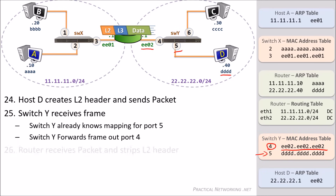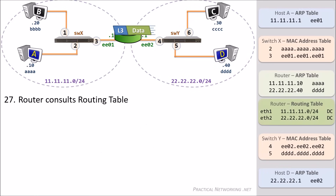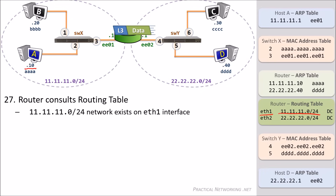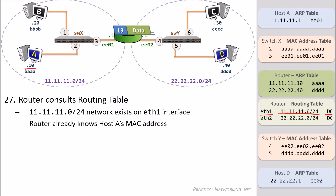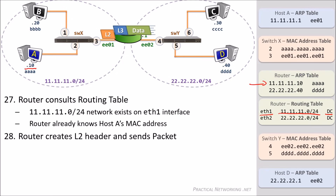The router will receive the packet and strip the Layer 2 header — its only purpose was to get the packet from Host D to the router. Like before, the router needs to figure out where to send this packet next. It takes a look at the Layer 3 header and sees that the packet is destined to 11.11.11.10. This network exists at the router's Ethernet 1 interface. Since the router is directly connected to this network and already has an ARP entry for Host A's IP address, it has everything it needs to create the Layer 2 header, with a source MAC of EEE01 and a destination MAC of AAAA.